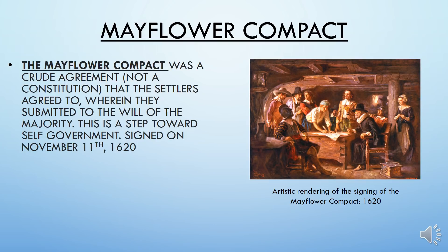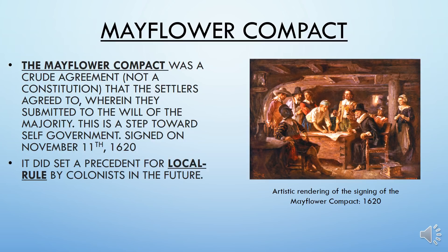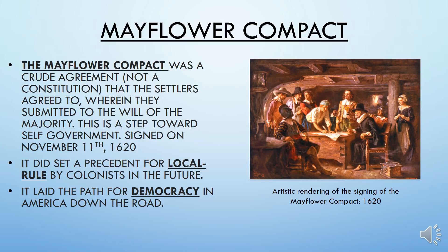Another early seed of American democracy is the Mayflower Compact. Some people believe this is more than it really is — it's pretty much just a crude agreement that the settlers agreed upon while they were on the boat. It's not a constitution, but it's still very historically significant. It's a step towards self-government and a crucial seed of democracy. Signed on November 11th of 1620, it set a precedent for local rule by colonists in the future, laying the path for democracy in America down the road.